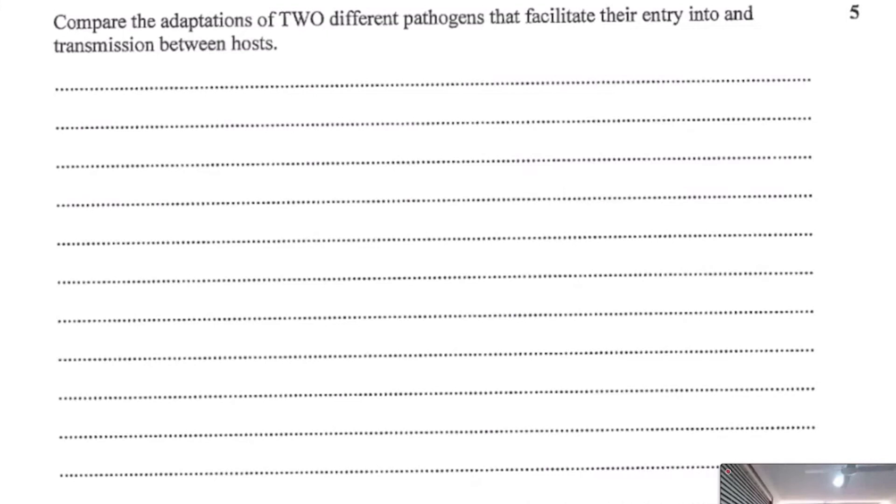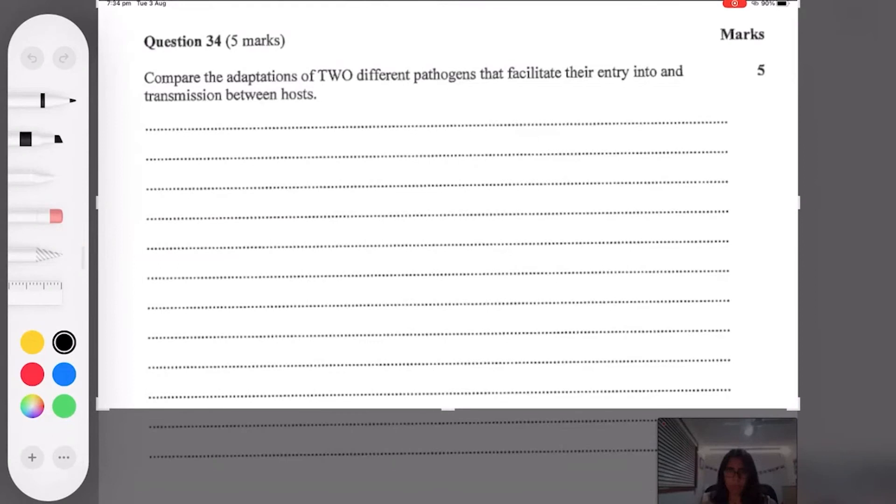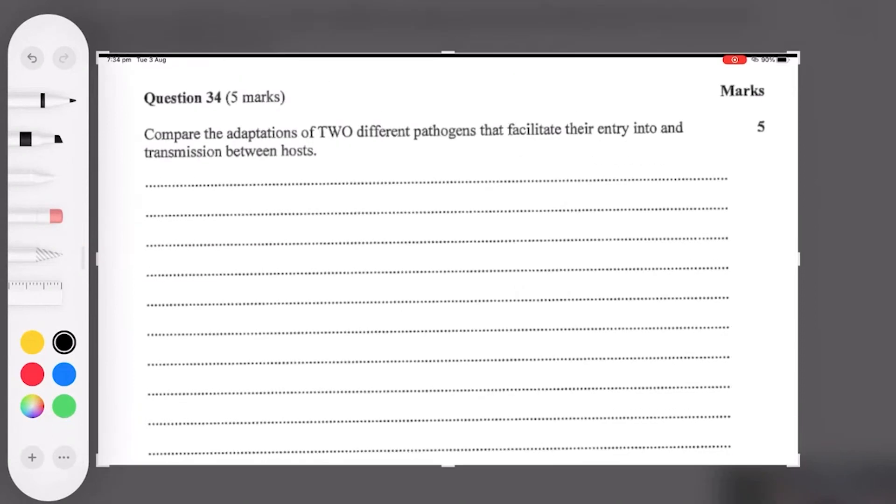Adaptations of two pathogens that facilitate entry and transmission between hosts. It's easy, we can do this one. It's either you know this or you don't know this, you can't really make too much up. So come on, what are your two examples? Let me ask Serene, give me one example. Pick a pathogen and tell me one adaptation it has for entry or transmission.